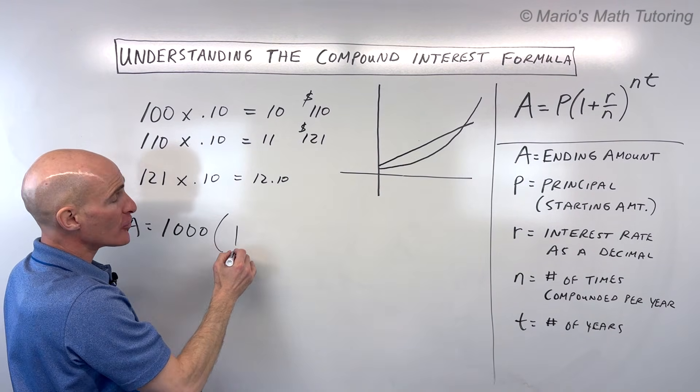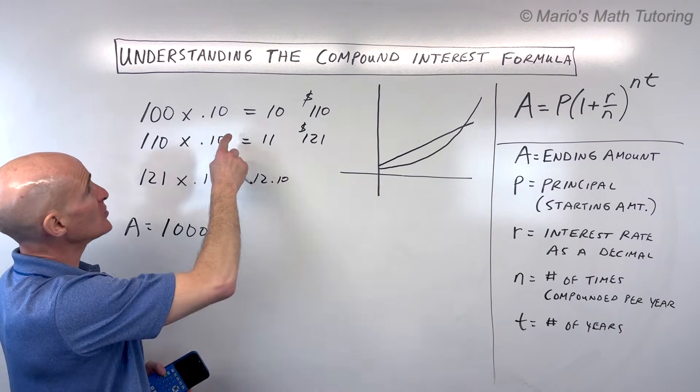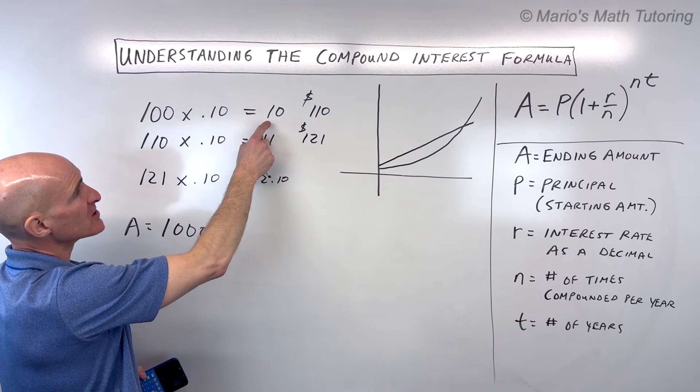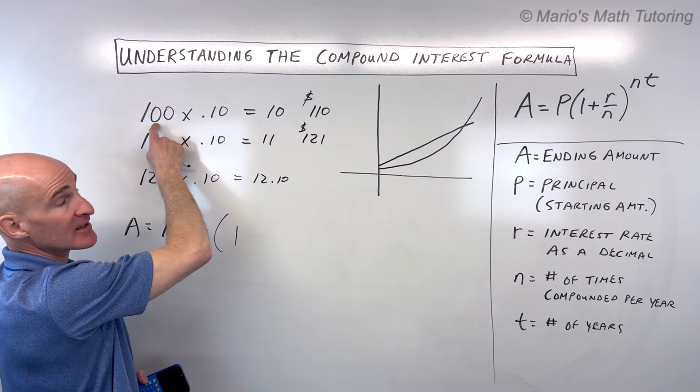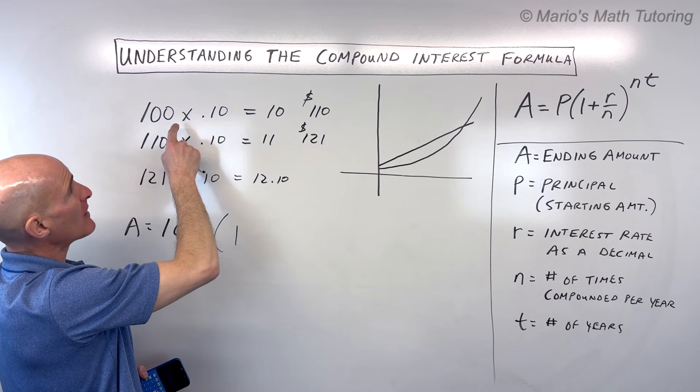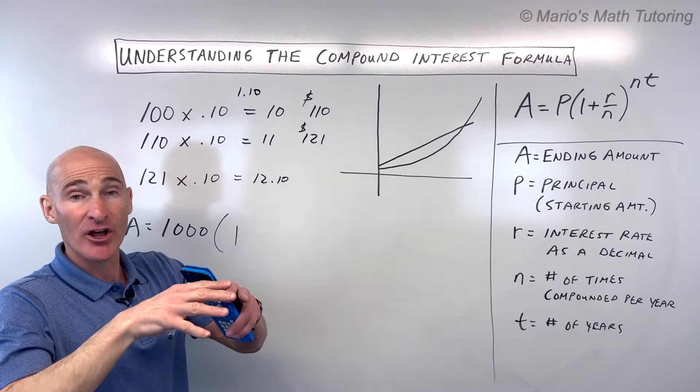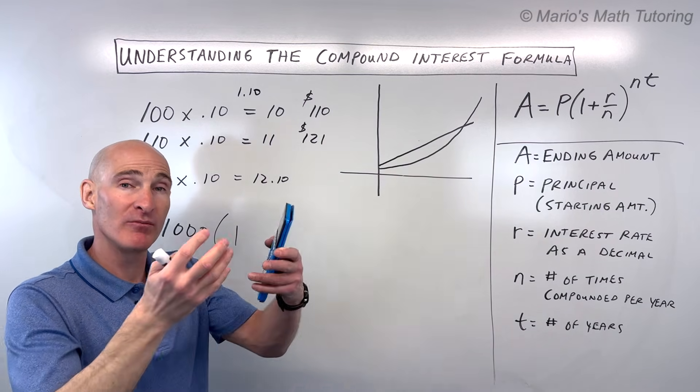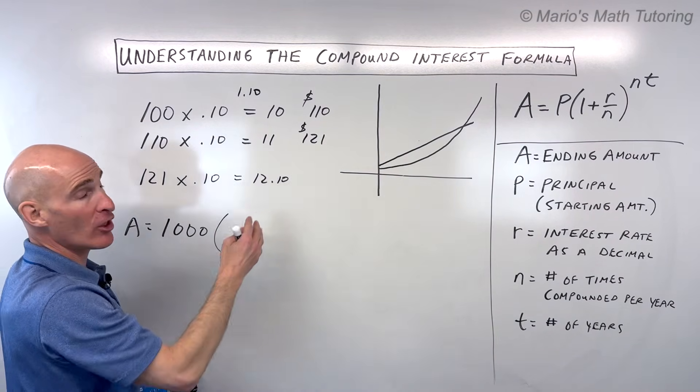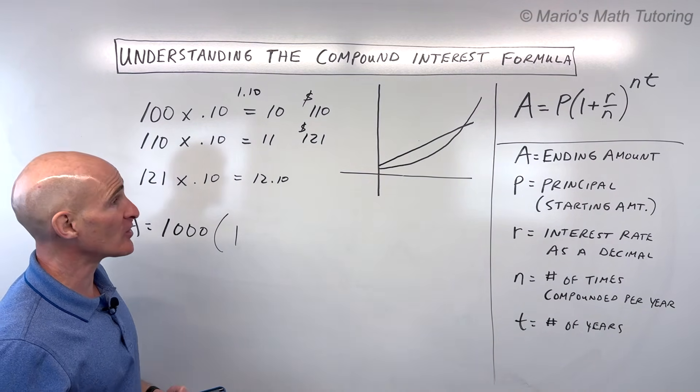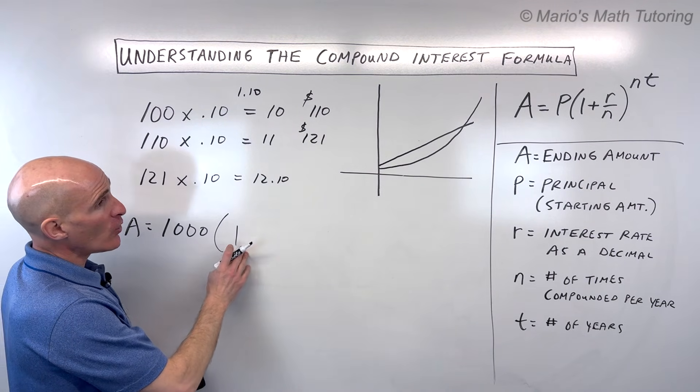The one represents like 100%. So when I was doing this problem, you see how I multiplied by 0.10 to get $10? And then I added it to the 100. If I would have just multiplied by 1.10, that's 110%. 100% means you take the original amount plus an additional 10%. I could have done it all in one step, but I just wanted to illustrate breaking it down. So that's what the one means.